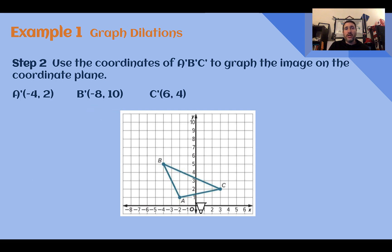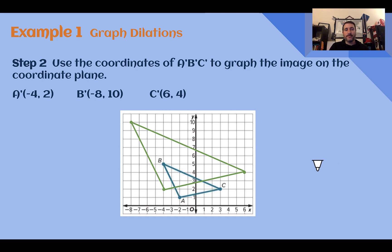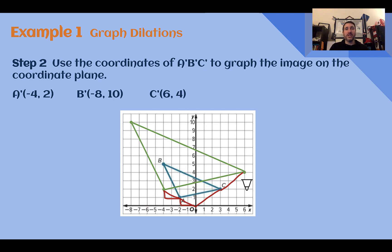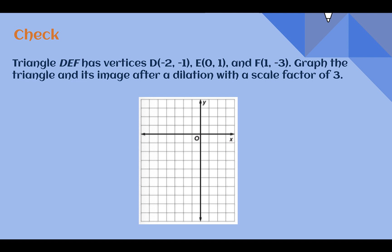Using those coordinates, we graph the image on the coordinate plane. Plotting (-4, 2), (-8, 10), and (6, 4), then connecting them gives the enlargement. Notice each point is now twice as far from the origin — for instance, to reach C we originally went 3 over and 2 up; now we do that same movement twice. Everything is twice what it was because the scale factor was 2. Pause the video to complete the check.